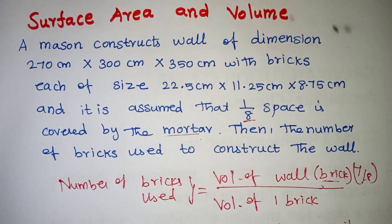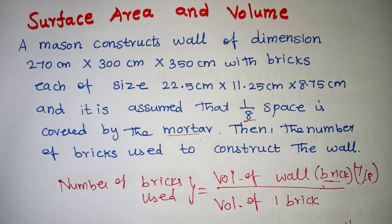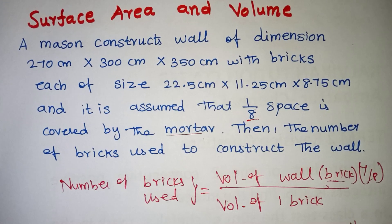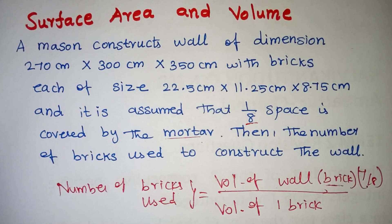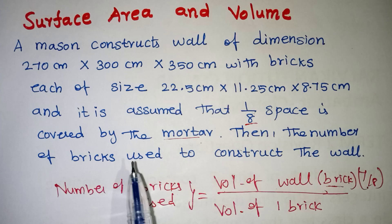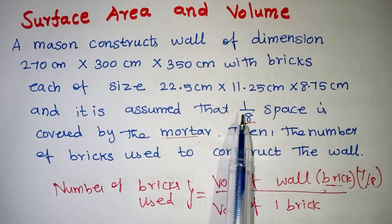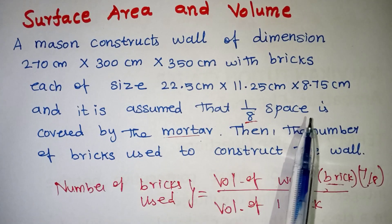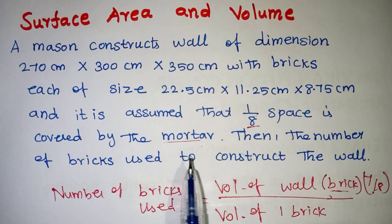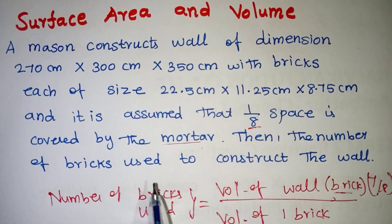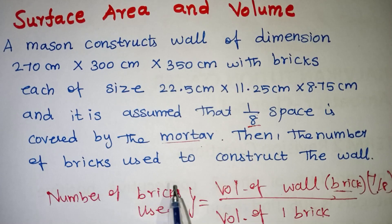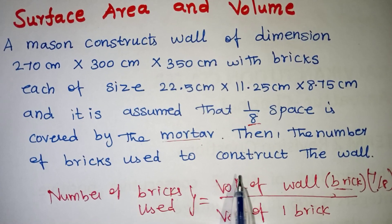We will learn surface area and volume. A wall of dimensions 270 cm, 300 cm by 350 cm is to be constructed with bricks. Each brick is of size 22.5 cm, 11.25 cm, 8.75 cm. It is assumed that 1/8 of the space is covered by the mortar. We need to find the number of bricks used to construct the wall.